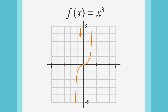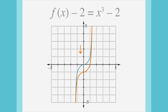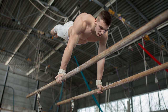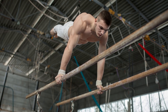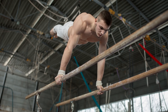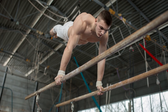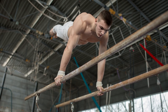And if we wanted the function to shift down 2, we'd do the opposite and subtract 2 from every y value. Notice that the y values have been reduced by 2, and this shifts the function down by 2. So far, we've shifted graphs up and down, left and right.